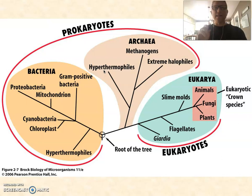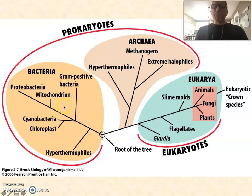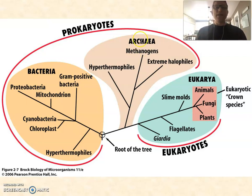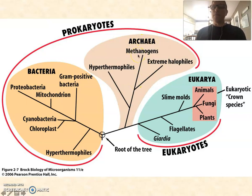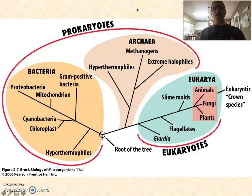Wherever there's water on planet Earth, we find bacteria living. In most of those same habitats, we also find archaea. If the conditions are moderate — moderate temperatures, moderate pH, moderate salinity, moderate pressure — it tends to be dominated by bacteria. And if those conditions are extreme — extremely hot, pH extremes either alkaline or acidic, extremely high salinity — then we tend to find the archaea predominating. Most of what we call extremophiles are found within the archaea, including methanogens, which are essentially extreme anaerobes.